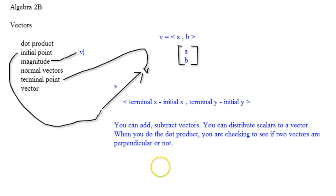So let's say you wanted to check if the vector <1, 4> and the vector <-8, 2> are perpendicular.